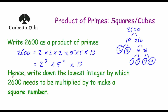Part B says: hence write down the lowest integer by which 2,600 needs to be multiplied by to make a square number. We need to make the power for the 2s even, so we multiply by another 2. The power for the 13s is 1, so we need to multiply by 13 as well to get 13 squared. So we need to multiply 2,600 by 2 times 13, which is 26.